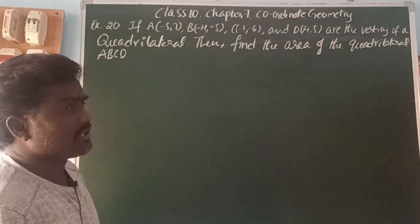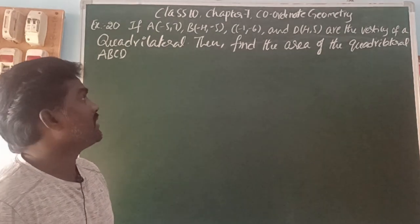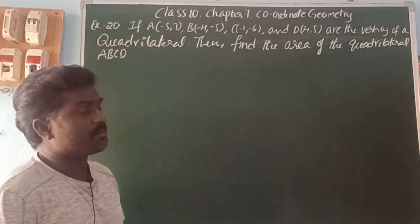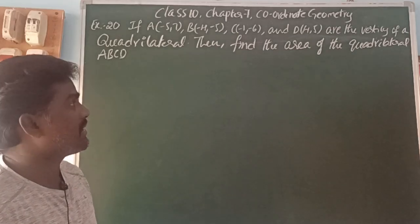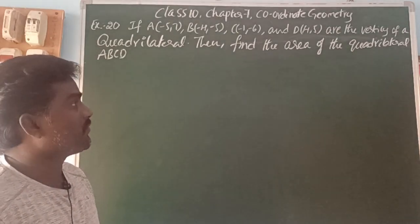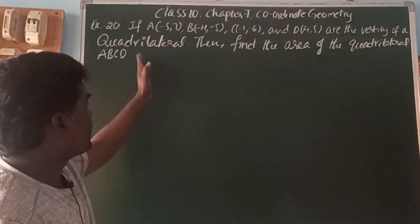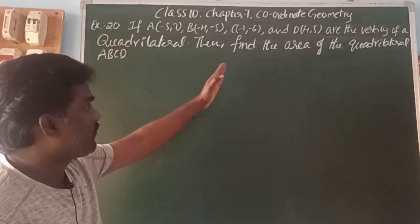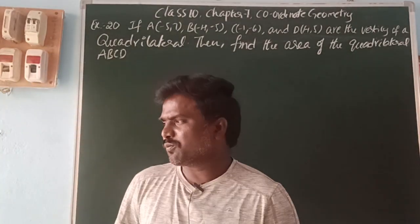If A(-5, 7), B(-4, -5), C(-1, -6) and D(4, 5) are the vertices of a quadrilateral, then find the area of the quadrilateral.